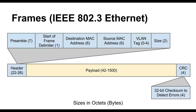If we look at IEEE 802.3 Ethernet, a frame consists of a header of 22 to 26 octets in length, a payload of 42 to 1500 bytes, and a 32-bit cyclic redundancy check (CRC) or checksum that can be used to detect errors. Breaking the header down: there's a 7-byte preamble, a 1-byte start-of-frame delimiter, a 6-byte destination MAC address, a 6-byte source MAC address, an optional 4-byte VLAN tag, and a 2-byte size field.